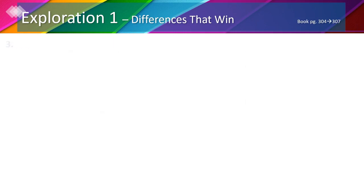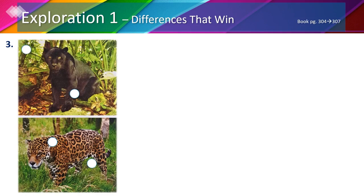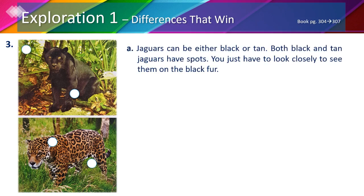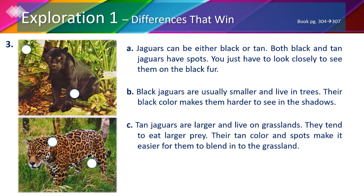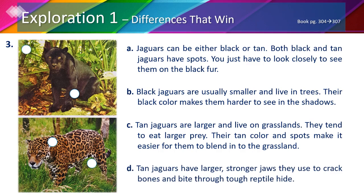Tan jaguars live on grasslands because it is easier for them to blend in; they are larger than black jaguars and have stronger jaws. On page 305 number 3, we're going to match some jaguar characteristics with the correct type of jaguar. A: all jaguars can be black or tan and both have spots. B: black jaguars are usually smaller, live in trees, and their black color makes them harder to see in shadows. C: tan jaguars are larger, live on grasslands, and their tan color and spots help them blend in. D: tan jaguars have larger, stronger jaws used to crack bones and bite through tough reptile hide.